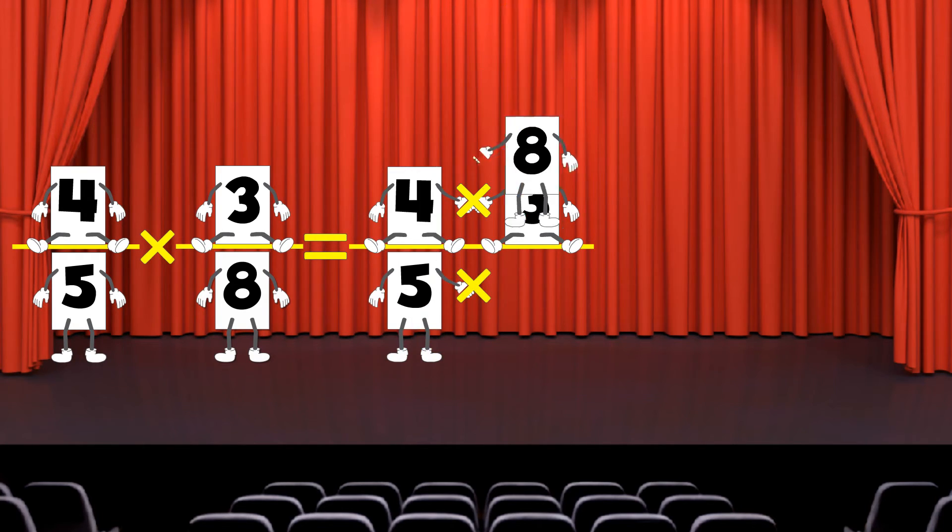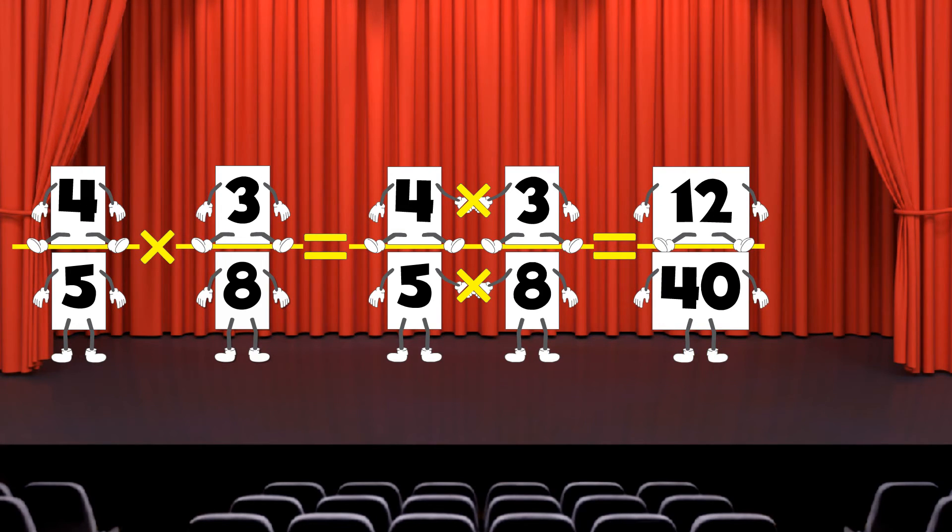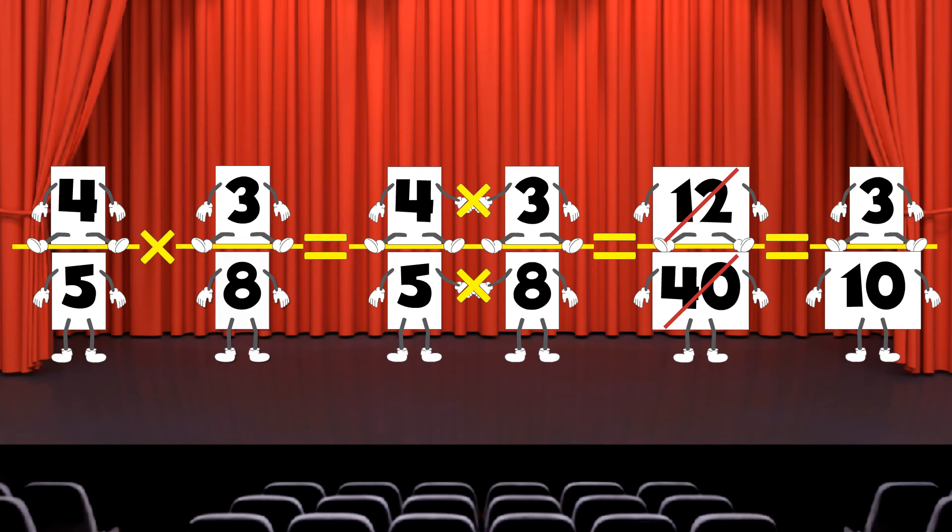Let's try another one. 4 over 5 times 3 over 8. First we multiply the numerators, 4 times 3. Next we multiply the denominators, 5 times 8. We get 12 over 40. To simplify, we divide both the numerator and the denominator by 4. We get 3 over 10.